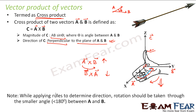One important point: when applying the right-hand thumb rule, rotation should be taken through the smaller angle between a and b. We always consider the acute angle θ when curling our fingers from a to b. The fingers should always be curled along the acute angle between a and b.